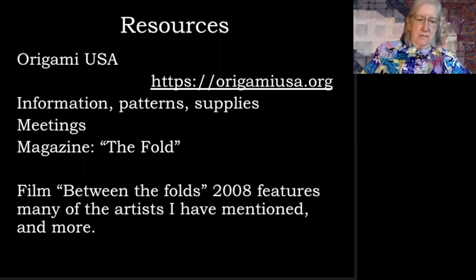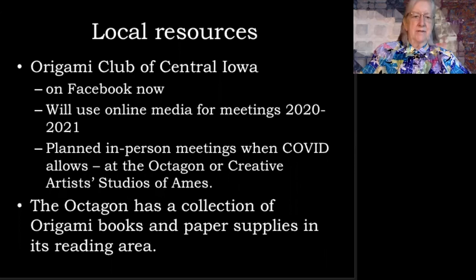Also, some of us have been organizing an origami club of central Iowa. We currently are on Facebook and we will use online media for meetings for the rest of this academic year. And we hope to have in-person meetings as soon as the COVID situation allows. This is a collaboration between the Octagon Center for the Arts in Ames and the Creative Artist Studios of Ames. And the Octagon already has a collection of origami books and paper supplies in its reading area for people who wish to experiment with some designs.